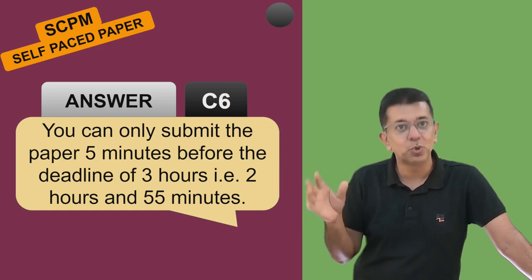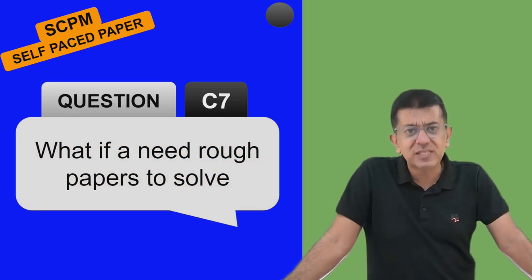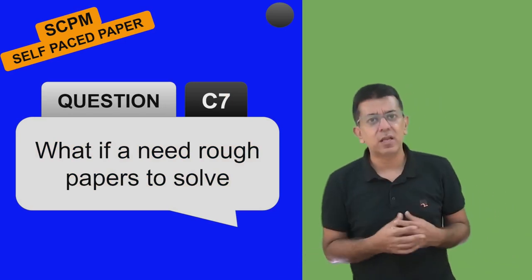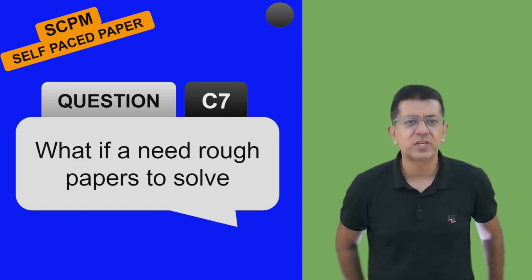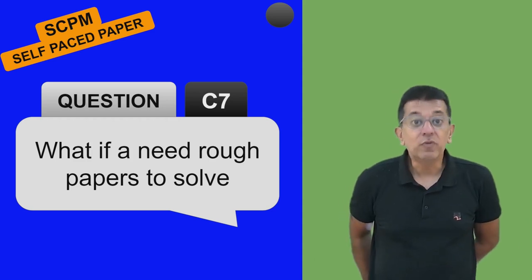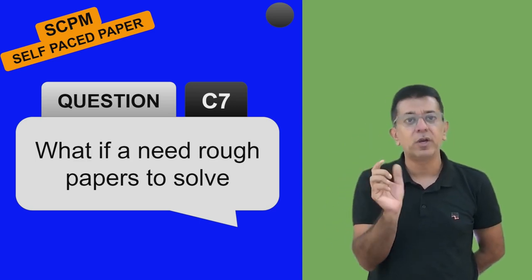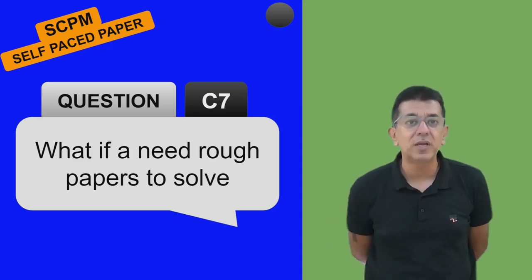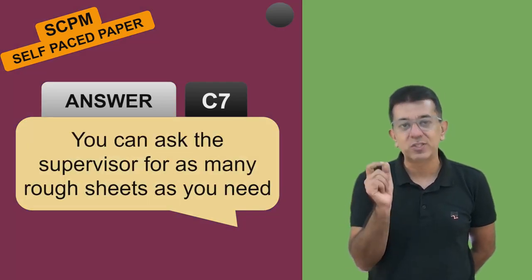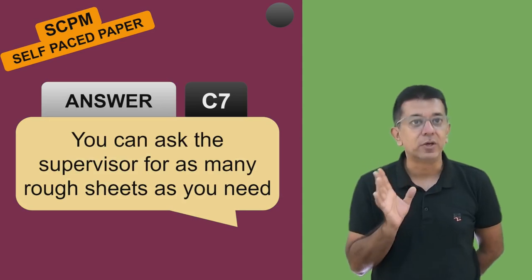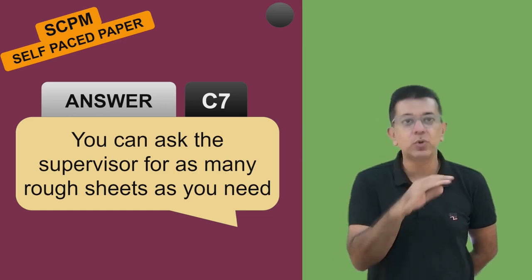Please ensure that you are going inside the examination hall for a period of three hours. If you have any appointments, ensure those are only given after three hours. There will be practical questions like Activity Based Costing, Value Chains, etc. If you need to do rough working, you only have to give the final answer on the computer. The center will give you as many rough sheets as you need - you can ask the supervisor and they will keep on supplying to you.